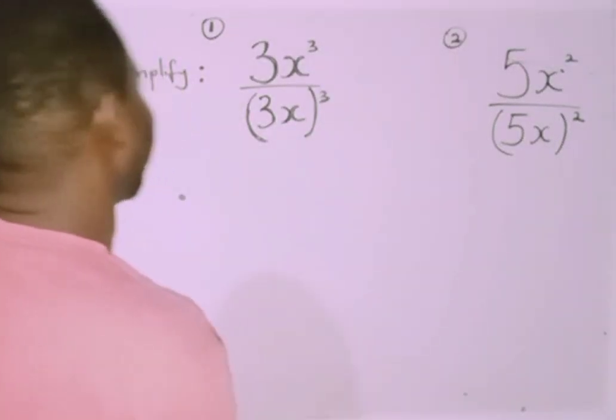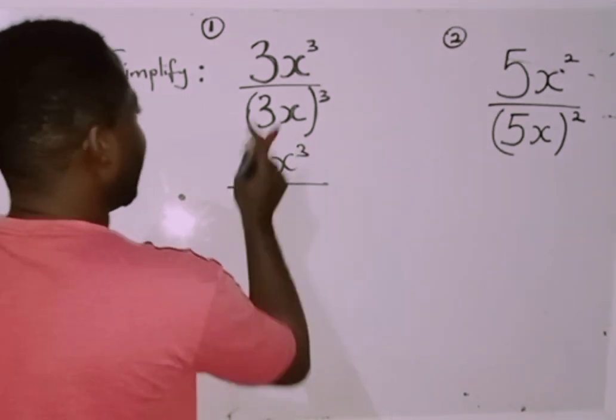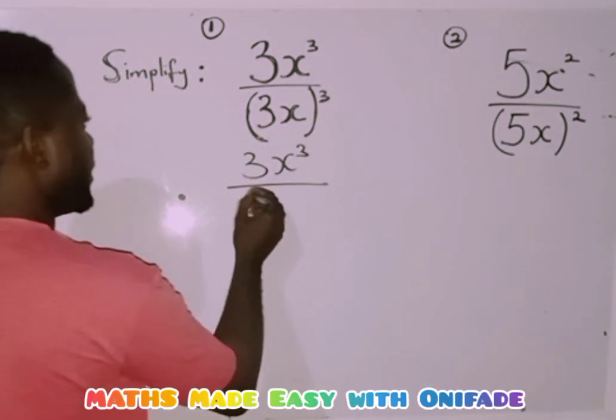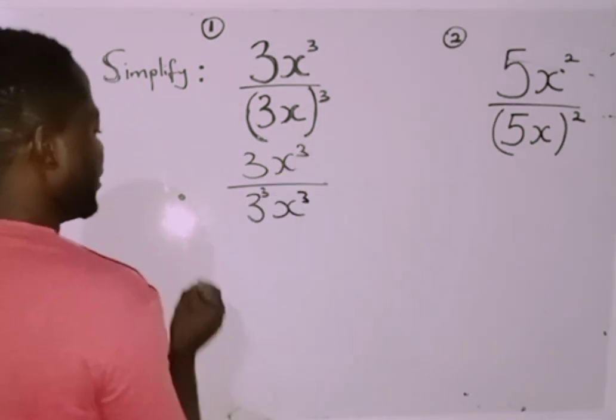Hello guys, let's quickly solve this. I'm having 3x³ all over (3x)³. Since this is in the bracket and it has power of 3, it means both 3 and x have the power of 3.